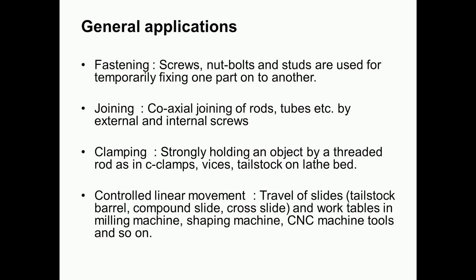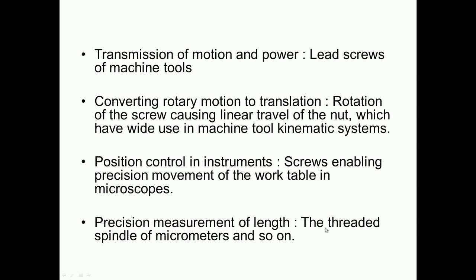The general applications of screw threads include fastening purposes — screws, nuts, bolts, and studs are used for temporarily fixing one part onto another, and for joining coaxial rods and tubes by external and internal screws. They are also used for clamping, to strongly hold an object by a threaded rod as in C clamps, visors, and tile stock on a lathe bed. They are used for controlled linear movement, such as travel of slides and movement of work tables in milling machines, shaping machines, and CNC machine tools.